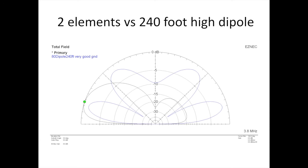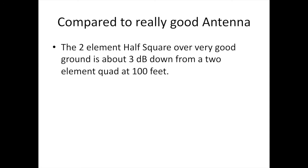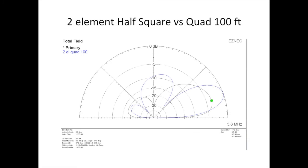This is the two elements versus a 240 foot high dipole. Theoretically, a two element half square could beat a 240 foot high 80 meter dipole. Compared to a really good antenna, the two element half square over very good ground is about 3 dB down from a two element quad at 100 feet. So that's not too shabby. This is a picture of a two element quad versus the two element half square. The quad being 100 feet and the half square being significantly lower.